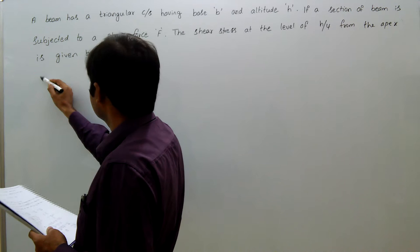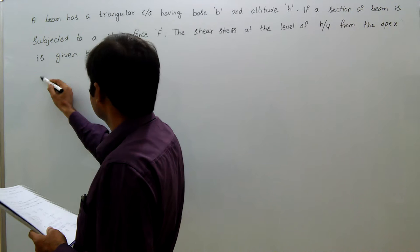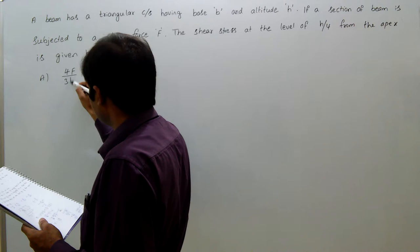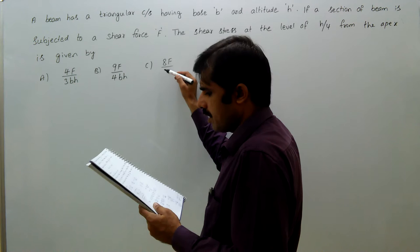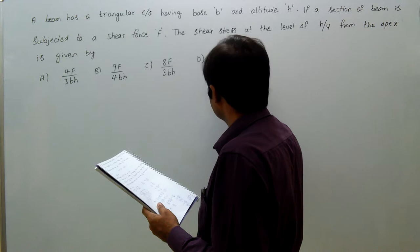Option A: 4F by 3BH, Option B: 9F by 4BH, Option C: 8F by 3BH, Option D: 3F by 8BH.